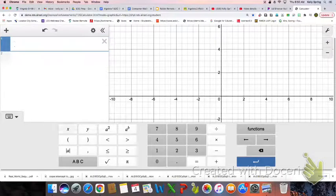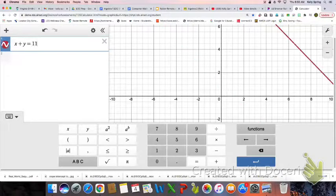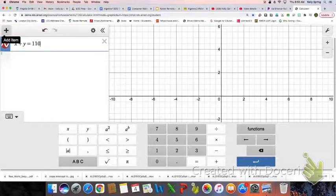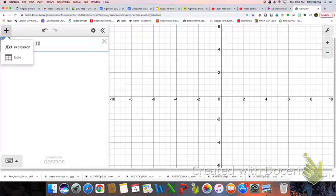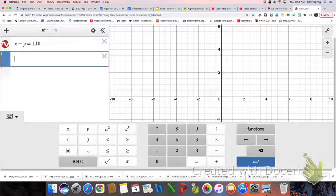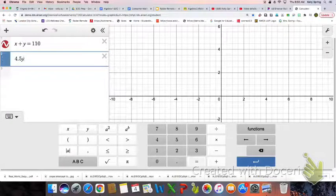Let's enter in our first equation: X plus Y equals 110. After you do that, click the plus button to add an item and select expression. Now we can do 4.5Y equals X.